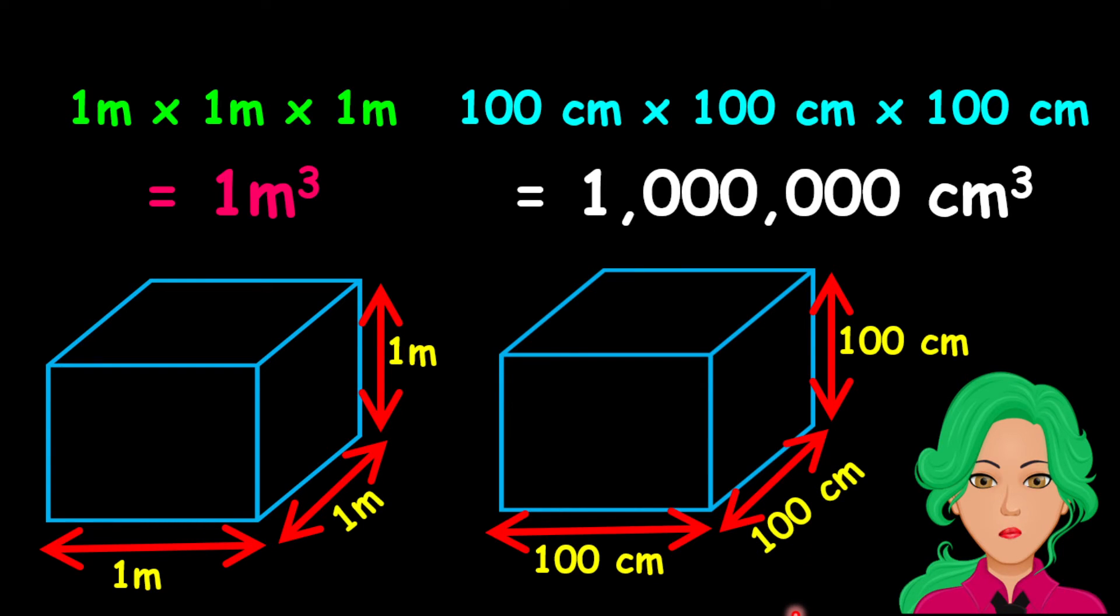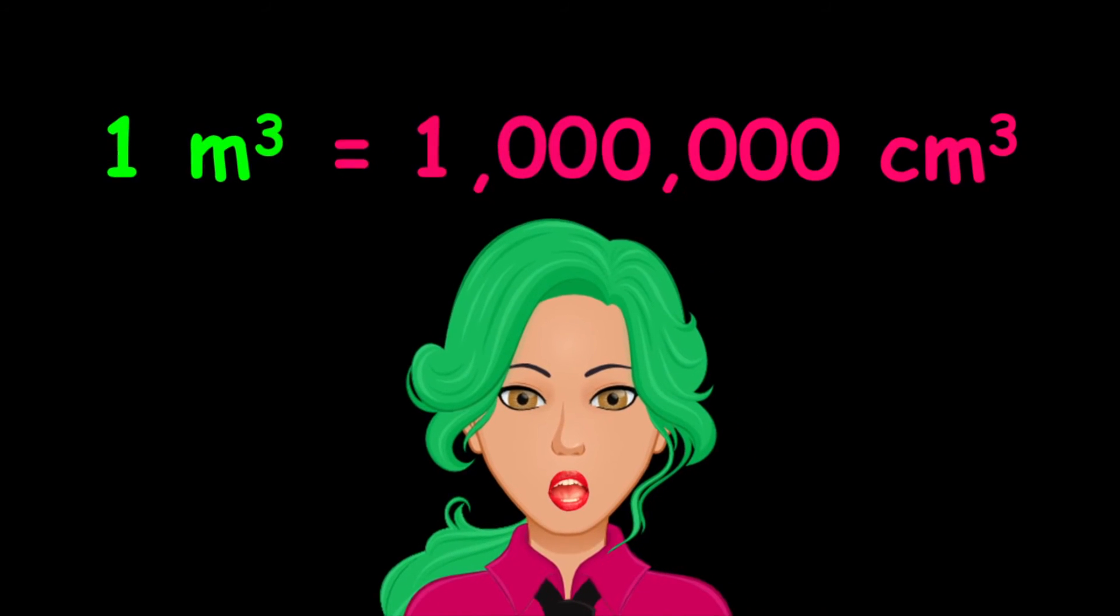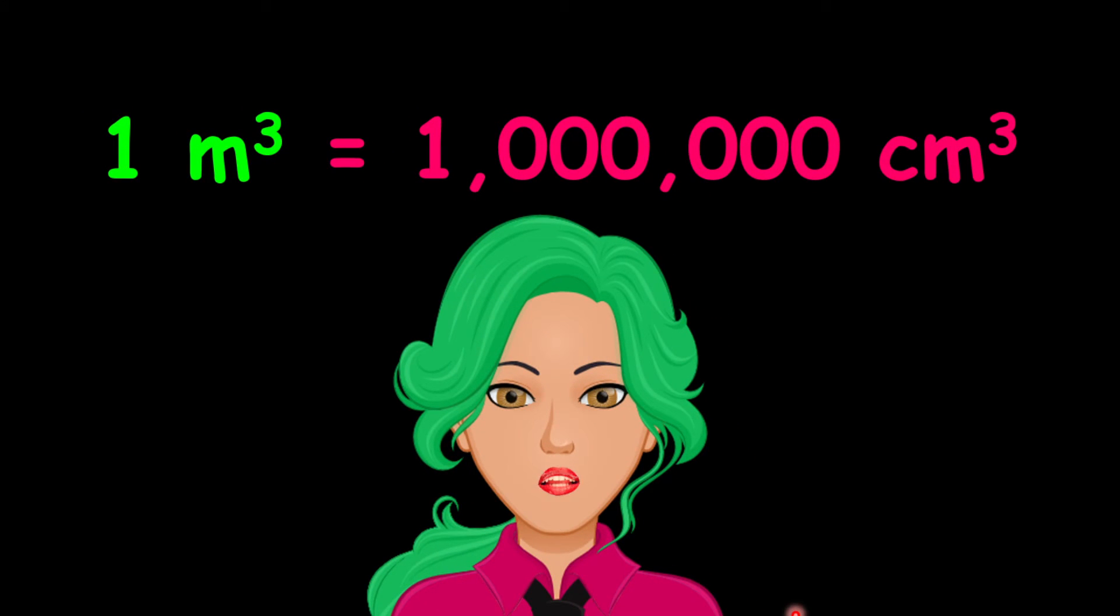Now, you can see that 1 meter cube is really the same as 1 million centimeters cube. This is so because the conversion is three-dimensional, which means the 100 centimeters was multiplied three times.